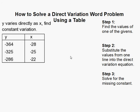How to solve a direct variation problem using a table. So the first step is to find the value of the givens and we're given this table here.